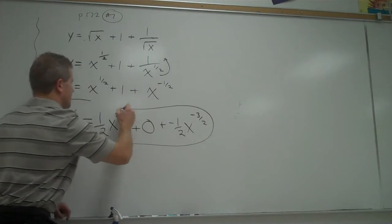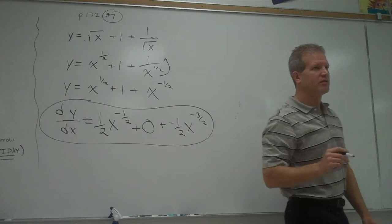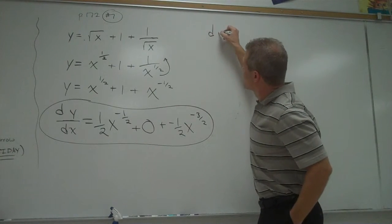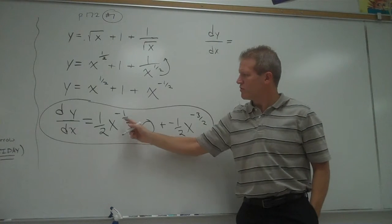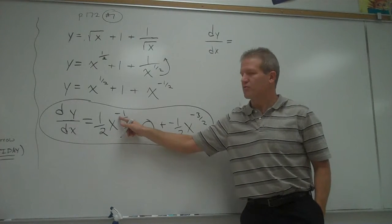That's one way that you can write down your derivative. Any questions about that? All right. Now, there's other ways you could write the answer. I'm just going to show you a couple more ways you could write it. You could move this negative x exponent term down to the denominator and change that to a positive one half.